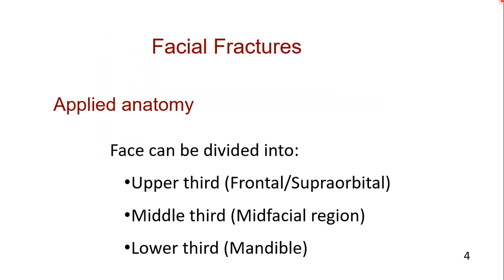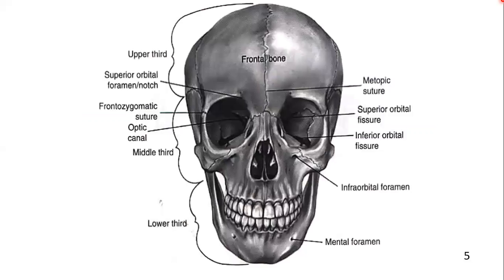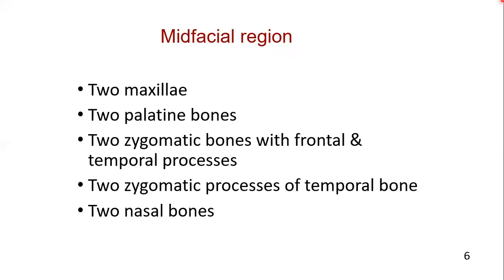In order to understand the classification of facial fractures, the face can be divided into upper third, middle third, and lower third. The upper third contains the frontal bone, while the lower third contains the mandible. This diagram shows the different bones of the middle third.